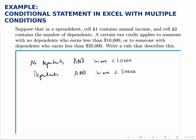Someone will get a tax credit if they're either the first category or the second category. So we need to build a conditional statement that has the first compound statement or the second compound statement: no dependents and income less than $10,000, or dependents and income less than $20,000. We're going to have several pieces, but we'll build it systematically.